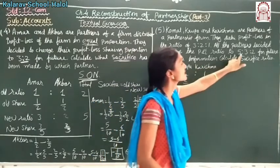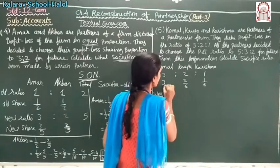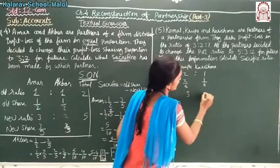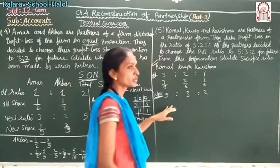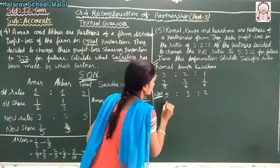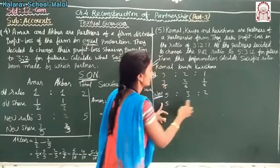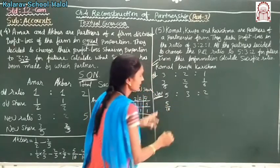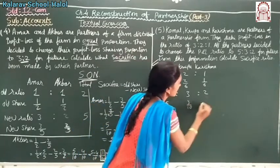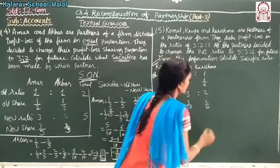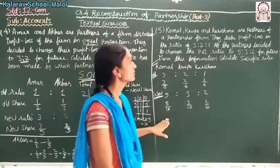Now the new ratio is 5 is to 3 is to 2. Total is 5 plus 3 plus 2 equals 10. So new shares are 5 upon 10, 3 upon 10, and 2 upon 10.